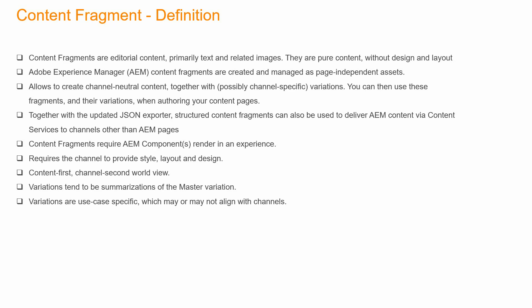Variations are like summarizations from the master variation. The master variation can be changed with required data or images, and required variations can be created from it. Each variation can be specific to a use case. For example, a mobile channel may not require all the images and text in the master, so you can create a mobile variation with only the required content, which is then used by the mobile channel via the content service.